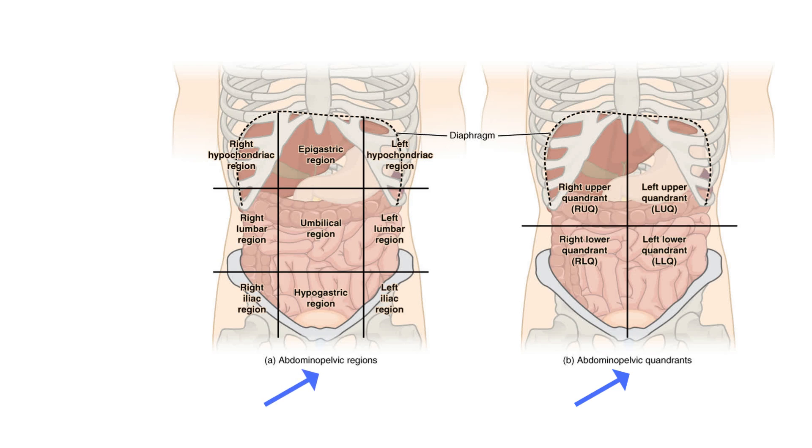The nine abdominal regions are a bit more complex. Four planes are needed to divide the abdomen into nine equal sections. There are two parasagittal planes, sometimes called lateral lines, and two transverse planes.